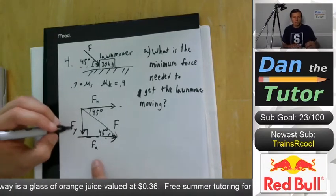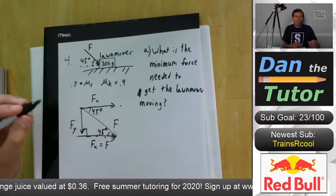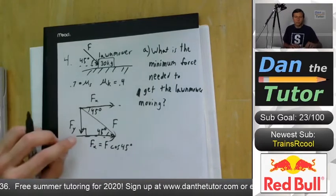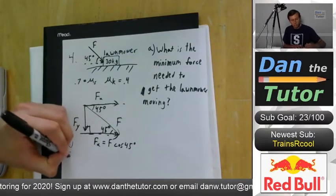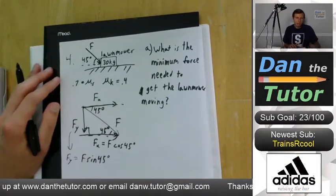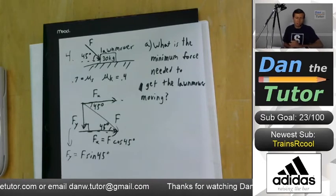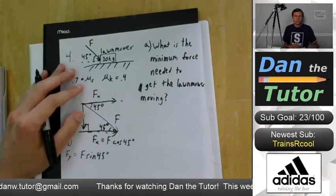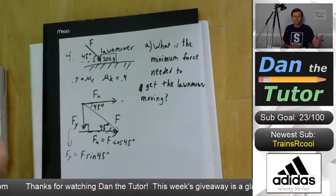Fx equals the hypotenuse F times cosine 45 degrees, because we're looking at the adjacent leg of the triangle. Fy equals F sine 45 degrees, because that's the opposite leg and it uses sine. One thing that's cool about 45-degree angles specifically: cosine 45 equals sine 45 - they're both √2/2 - so if you mix them up it doesn't matter, they have the exact same value.